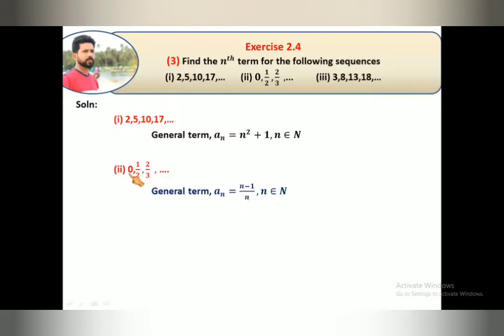Then come to third part: 3, 8, 13, 18. This is the answer, so think of yourself. Let's look at the general term. The general term is 5n minus 2. 5 table: 5 times 1 minus 2 is 3. 5 times 2 is 10, 10 minus 2 is 8. 15 minus 2 is 13. 20 minus 2 is 18. That's why the general term is 5n minus 2.